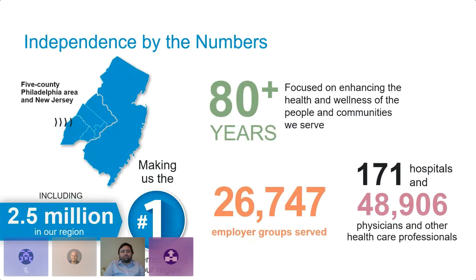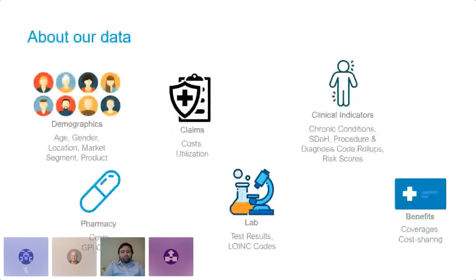Our vast network of insured individuals means that we work with hundreds of hospitals and tens of thousands of healthcare providers. At Independence, we work with a diverse set of data. Some of the data includes demographics such as age, gender, location, market segment, and product. Most of our data comes from claims, which includes cost and utilization. We also utilize chronic conditions, procedure, and diagnosis code rollups, and risk scores.